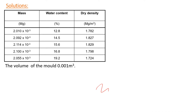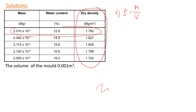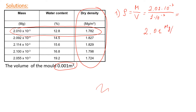Now let's look at the solutions. We would like to get dry density, as shown in this column. The first step is to get the bulk density, which is the mass of compacted soil divided by the volume of compacted soil. For the first test, the mass was 2.01 × 10⁻³ and the volume of the mold was 1 × 10⁻³ cubic meters, giving us a bulk density of 2.01 megagrams per cubic meter.